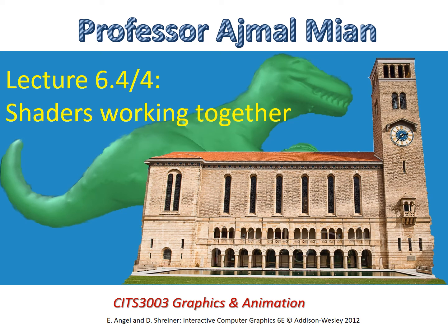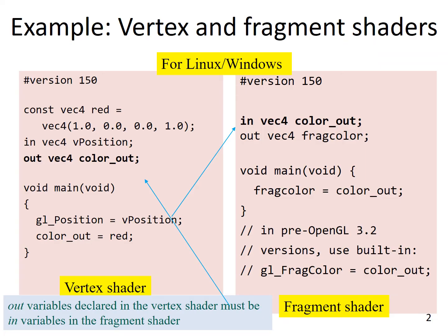In this lecture, we look at how the two shader programs work together with the application program to produce the desired output. Looking at the vertex and fragment shaders side by side for Linux and Windows, we can see that the out variable defined in the vertex shader is basically an in variable in the fragment shader. The names and types match perfectly — except that one is an out variable in the vertex shader and an in variable in the fragment shader. So out variables declared in the vertex shader must be in variables in the fragment shader. This is a handshake that has to be performed between the vertex and the fragment shader.